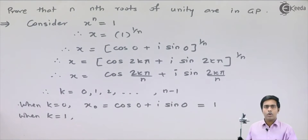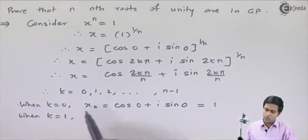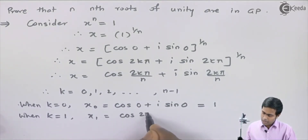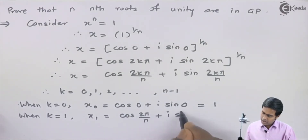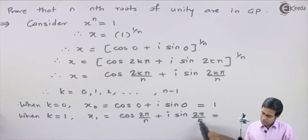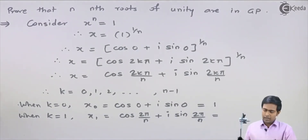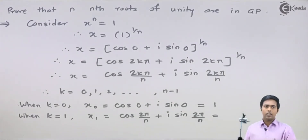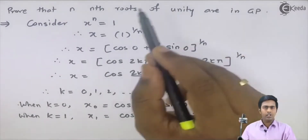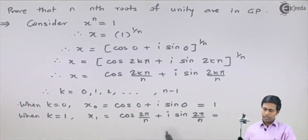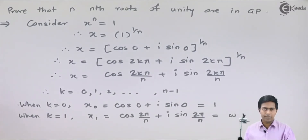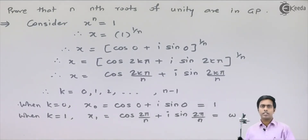When k = 1, we get x₁ = cos(2π/n) + i·sin(2π/n). To prove all roots are in GP, we consider the roots in polar form. We define omega (ω) as cos(2π/n) + i·sin(2π/n), so x₁ = ω. Let's see what the next root looks like.